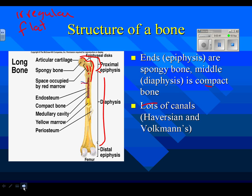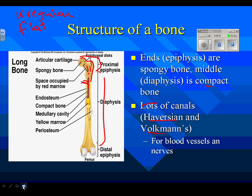Also, what you find a lot in bones are canals — Haversian canals and Volkmann's canals. Why would bones have canals? You have to be able to get blood vessels and nerves in and out of the bone. Bones do feel pain — if you've ever broken a bone, you know that. We'll take a look at a skull and you'll see lots of openings for nerves to pass through to get to parts of your face.